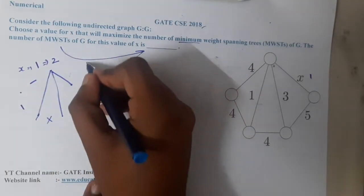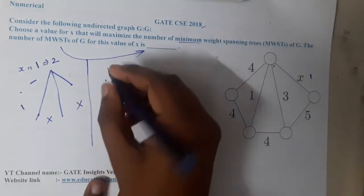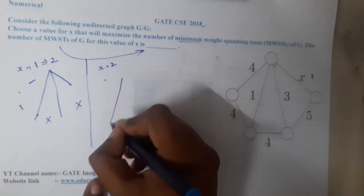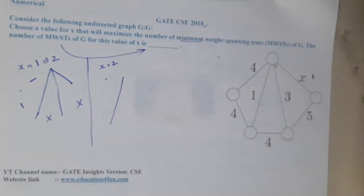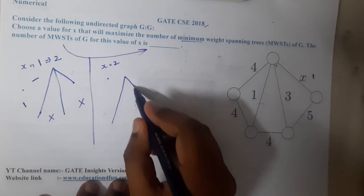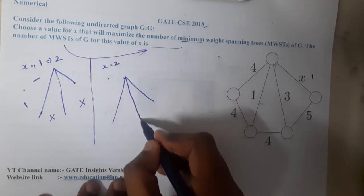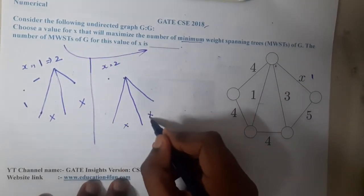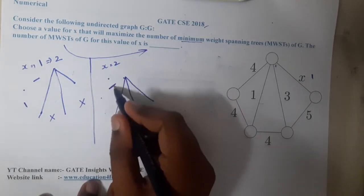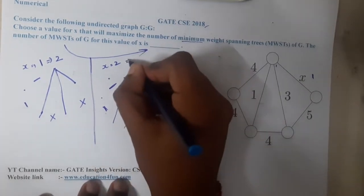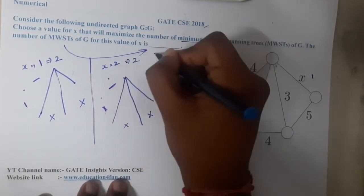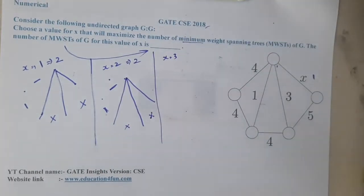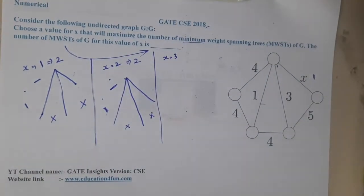So in total, if x=1 the number of options are 2. Similarly, if x=2, I will take this particular edge, then this edge, then this edge. I am not allowed to take this or this, so at max again I am having only two options — either this or this. So even for x=2 I am having two options.